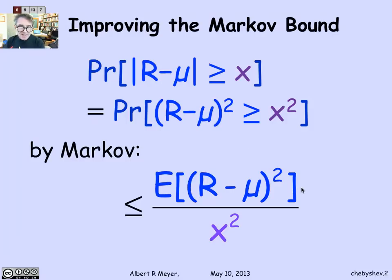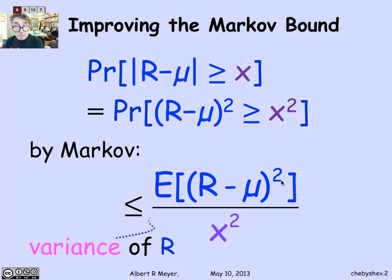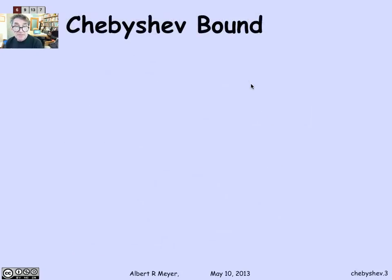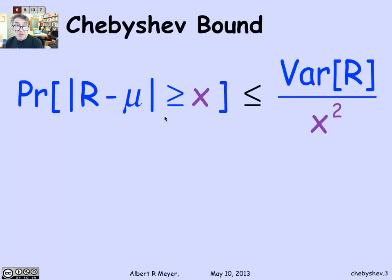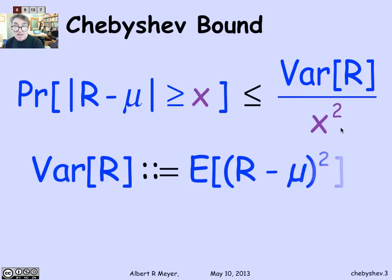This numerator — the expectation of (r minus mu) squared — may not seem very memorable, but you should remember it, because it's so important it has a name all its own. It's called the variance of r. The variance is an extra bit of information about the shape of the distribution of r that allows you to state much more powerful theorems about the probability that r deviates from its mean by a given amount. We can restate the Chebyshev bound by replacing that expectation formula with its name: the probability that the distance between r and its mean is greater than or equal to x is the variance of r divided by x squared, where variance of r is the expectation of (r minus mu) squared.